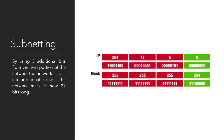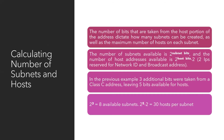Here is an example of subnetting. By using three additional bits from the host portion of a network, the network can be split into additional subnets. Instead of using the typical Class C mask of 255.255.255.0, three bits from the host portion are added to the network portion, making the subnet mask 255.255.255.224. Out of the 32 bits, 27 are used for the network — this is considered a 27-bit network mask. The number of bits taken from the host portion determines how many subnets can be created and the maximum number of hosts per subnet.